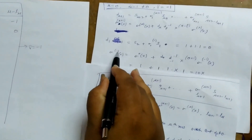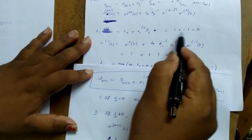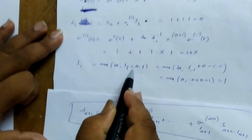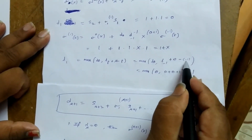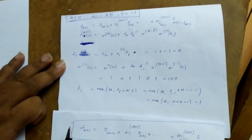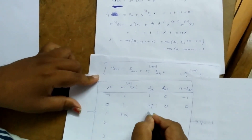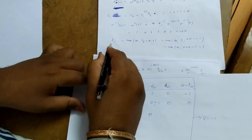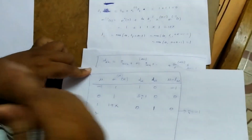For d1, we need σ_1(1): the coefficient of x in σ_1(x)=1+x is 1. Therefore d1 = s2 + σ_1(1)·s1 = 0. The L1 value is the maximum of L0 and L_{-1} + μ - ρ = max(L0, L_{-1}+0-(-1)). The updated values for μ=1 are: σ_1(x)=1+x, d1=0, L1=1, and μ - L_μ = 1-1 = 0.